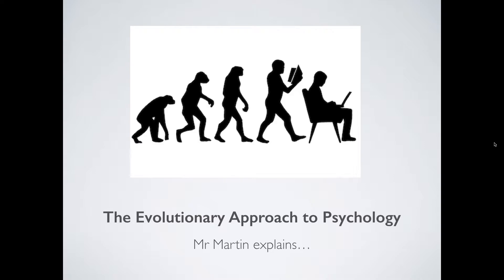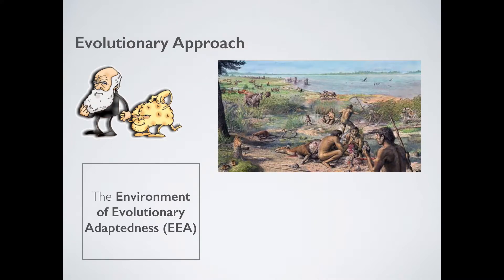We're not really going to be talking about the applications of this approach — we'll save that for a future time. But what we will be speaking about is the absolute basics of this approach and ultimately what it's got to tell us about the world of psychology. An evolutionary psychologist would attempt to explain our mental or psychological behaviours, such as memory, perception, or language, as an adaptation — that is, the products of evolution by natural selection.